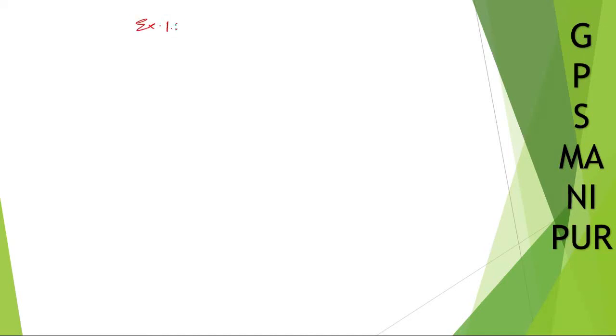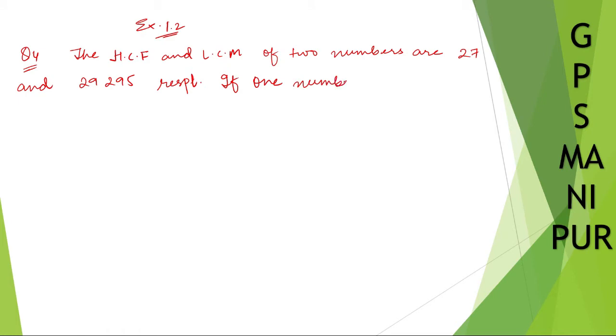Exercise 1.2, question number 4. Let me write down the question. If you think writing the question is not important, you can just skip ahead in the video. The HCF and LCM of two numbers are 27 and 29295 respectively.